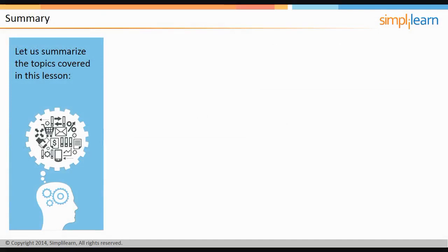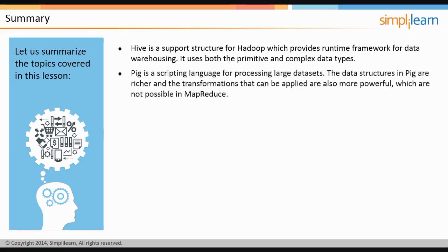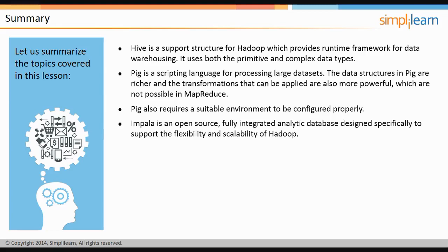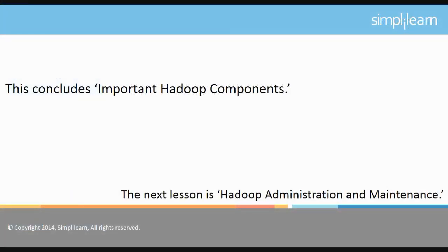Let us summarize the topics covered in this lesson. Hive is a support structure for Hadoop which provides a runtime framework for data warehousing and uses both primitive and complex data types. Pig is a scripting language for processing large data sets — its data structures are richer and its transformations more powerful than MapReduce. Impala is an open-source, fully integrated analytic database designed to support the flexibility and scalability of Hadoop, comprising components installable on multiple cluster nodes.